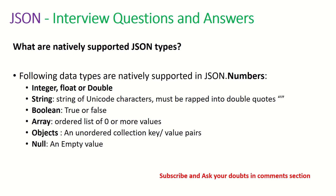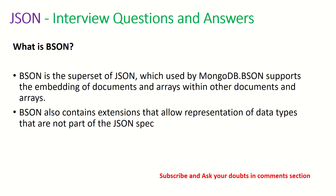What are the natively supported JSON types — or what are the different JSON data types? They can be integer, float/double, string, boolean, array, object, and null. Similarly, they might ask you: what is BSON? BSON is a superset of JSON which is used by MongoDB. BSON supports the embedding of documents and arrays within other documents and arrays. BSON also contains extensions that allow representation of data types that are not part of JSON. Remember: BSON is the superset of JSON, used by MongoDB.